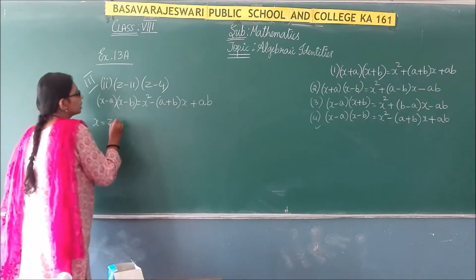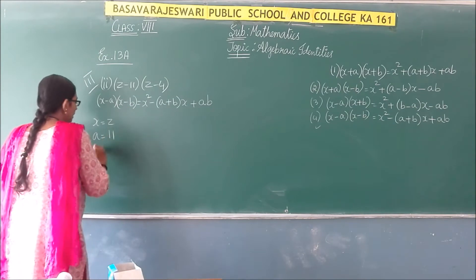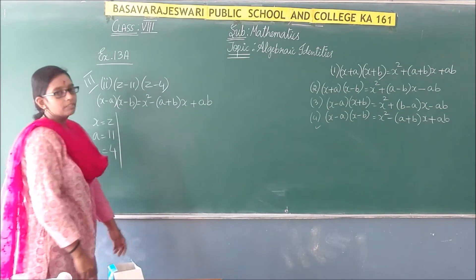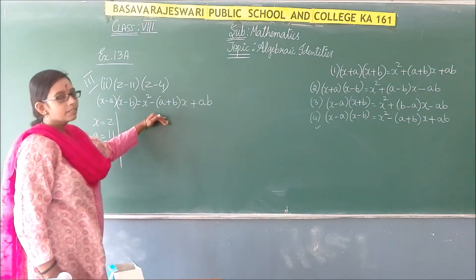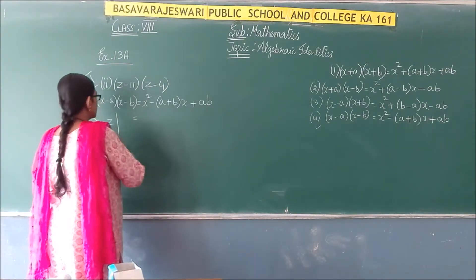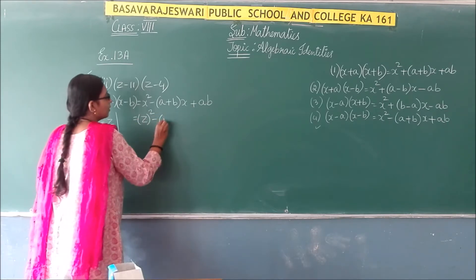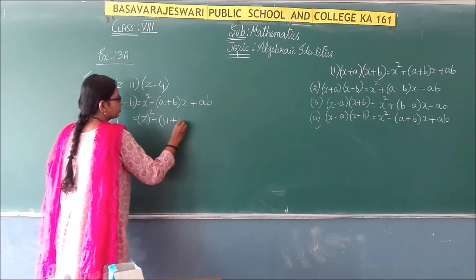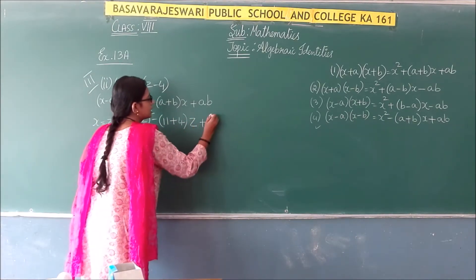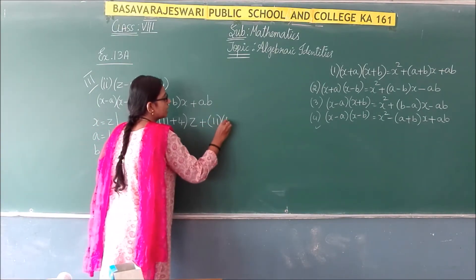Now what is the analogy here? In place of x we have z, in place of a we have 11, and in place of b we have 4. These are the values we substitute in the RHS of the identity.